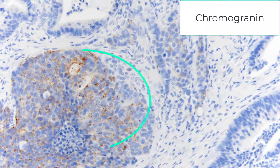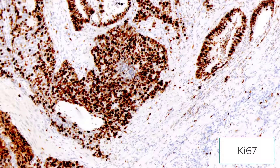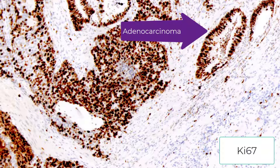And if you don't believe me, there's the positive chromogranin stain. The glandular component is negative. As you can see, the Ki-67 labeling index is nearly 100% in the neuroendocrine carcinoma component, but it is also positive in the adenocarcinoma component.